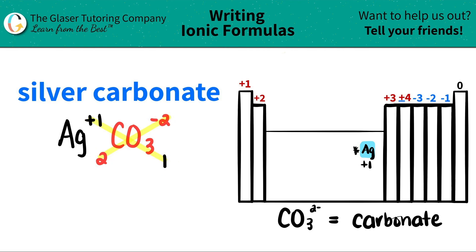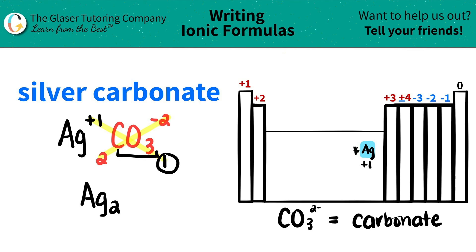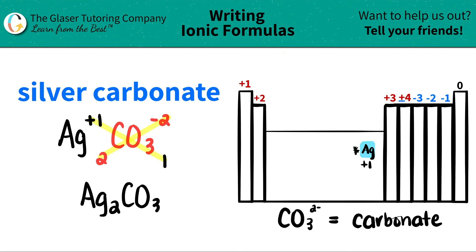When we write the compound, don't worry about the positives or the negatives — just focus on the subscripts. So now we're ready. I have silver, and there's two of them, so I'm just going to write a two. But now I only have one carbonate. When you have only one polyatomic, you don't have to write the one and you don't need parentheses. So I'm just going to say CO3 and I'm done.